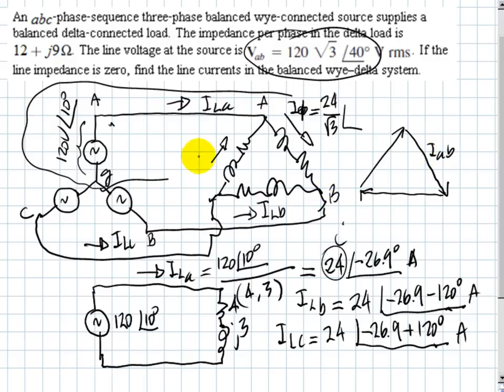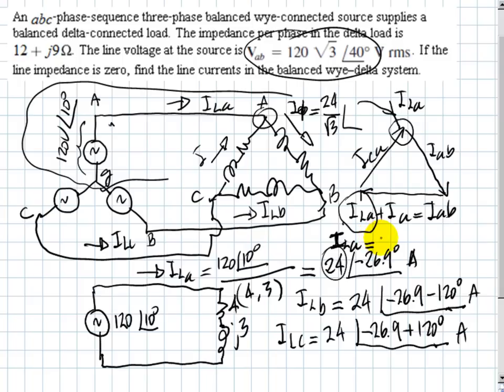This is the current from C to A. And here comes the current ILA. We can apply a KCL equation to this node here and write current going in: ILA plus ICA, and that is equal to current leaving, IAB.